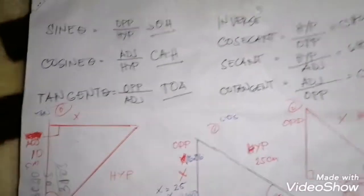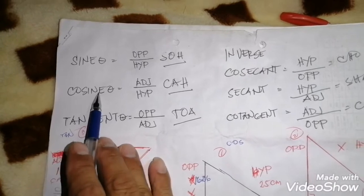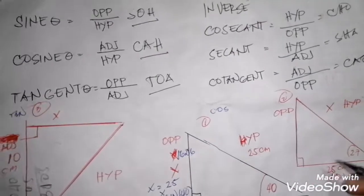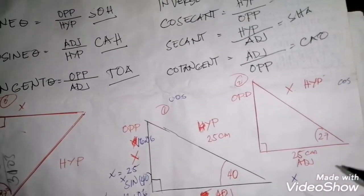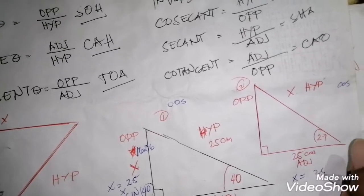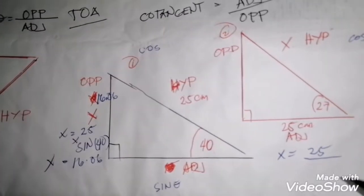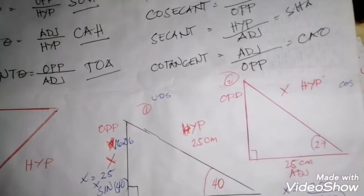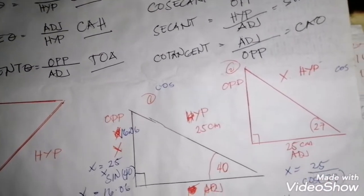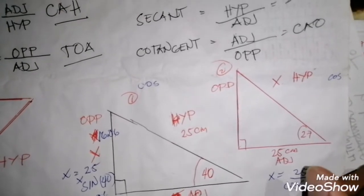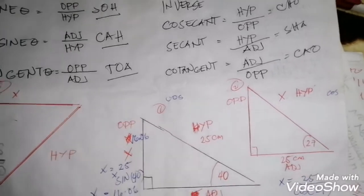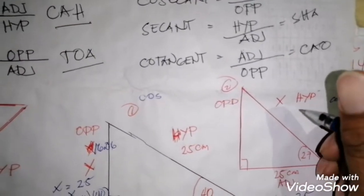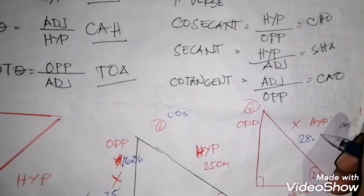For the second equation, we use cosine because it is adjacent over hypotenuse. x equals 25 divided by cosine 27 degrees. The answer equals 28.05. That is the answer for the hypotenuse — the longest side of the triangle — which is 28.05.